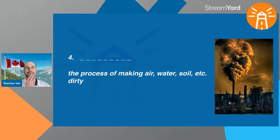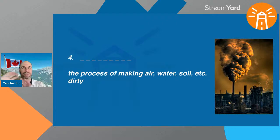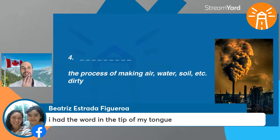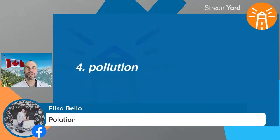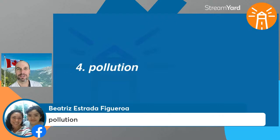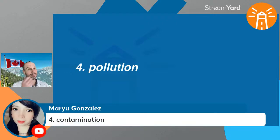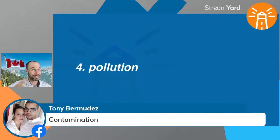Number four: the process of making air, water, or soil dirty — or what goes into the air, water, and soil that makes it dirty. Nine letters. Alyssa got it but with two L's — the word is 'pollution,' double L. Beatrice got it too. Meru suggested 'contamination' — pollution or contamination are pretty much the same thing.